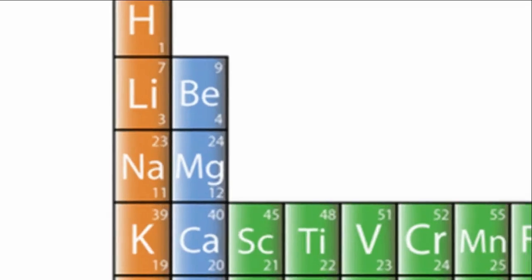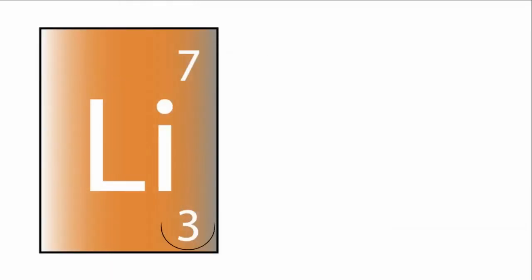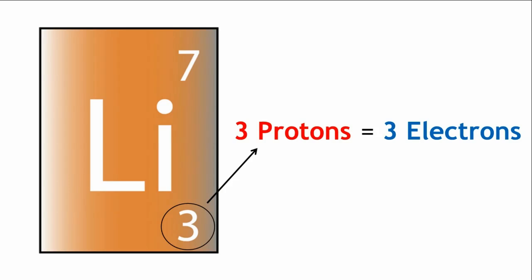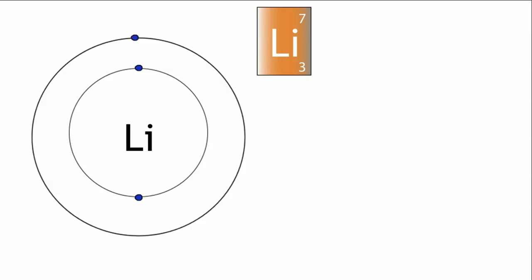Let's look at some arrangements. Lithium has three protons, therefore it has three electrons. The first two electrons are placed in the first shell, closest to the nucleus, and the third electron is placed in the second shell. Two plus one, three electrons.